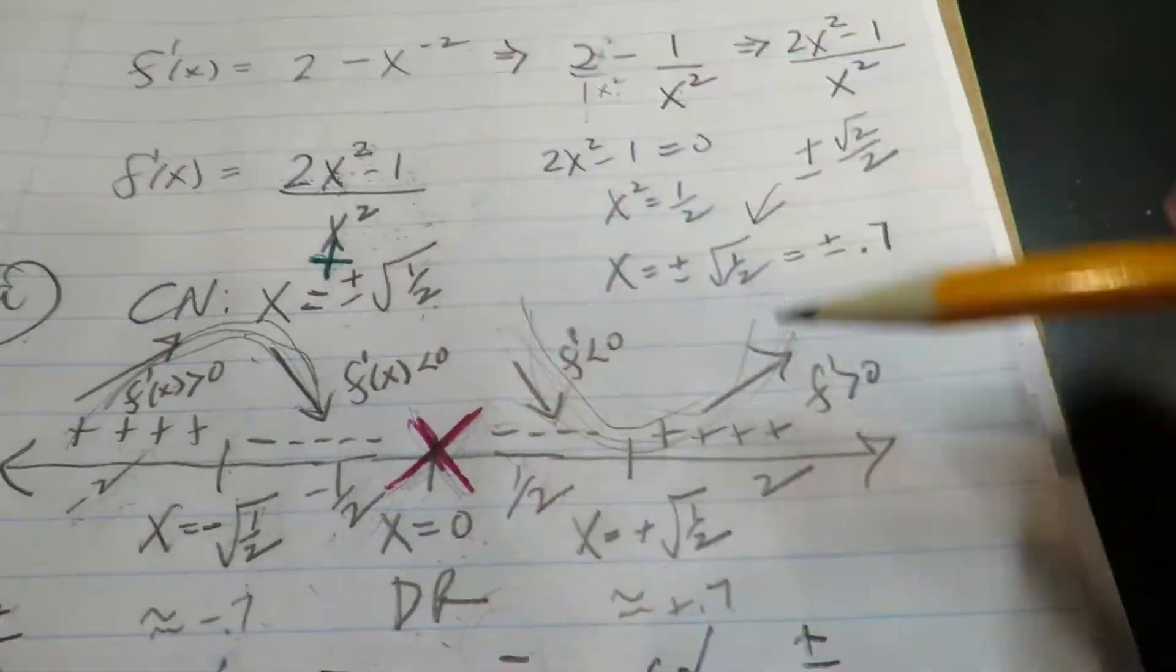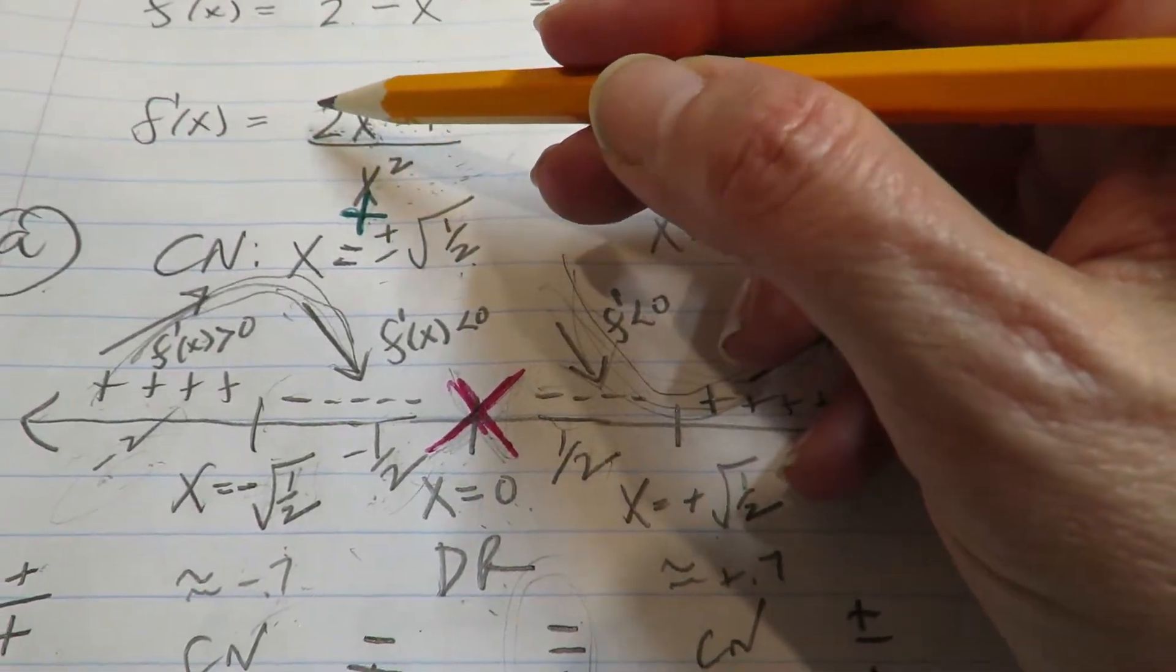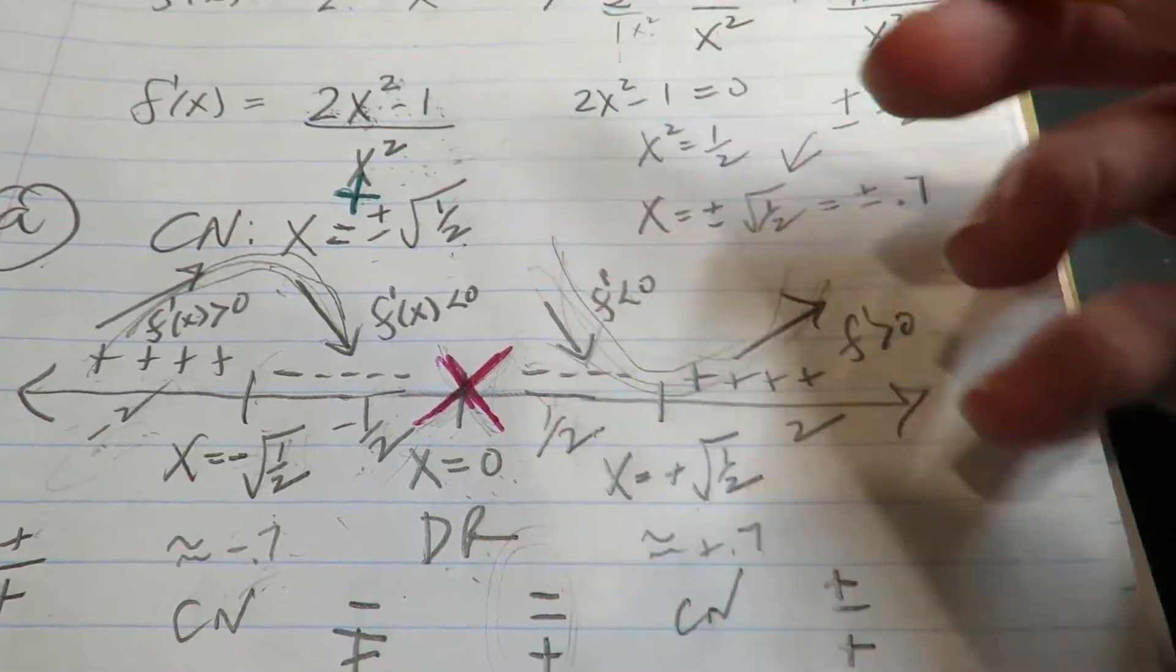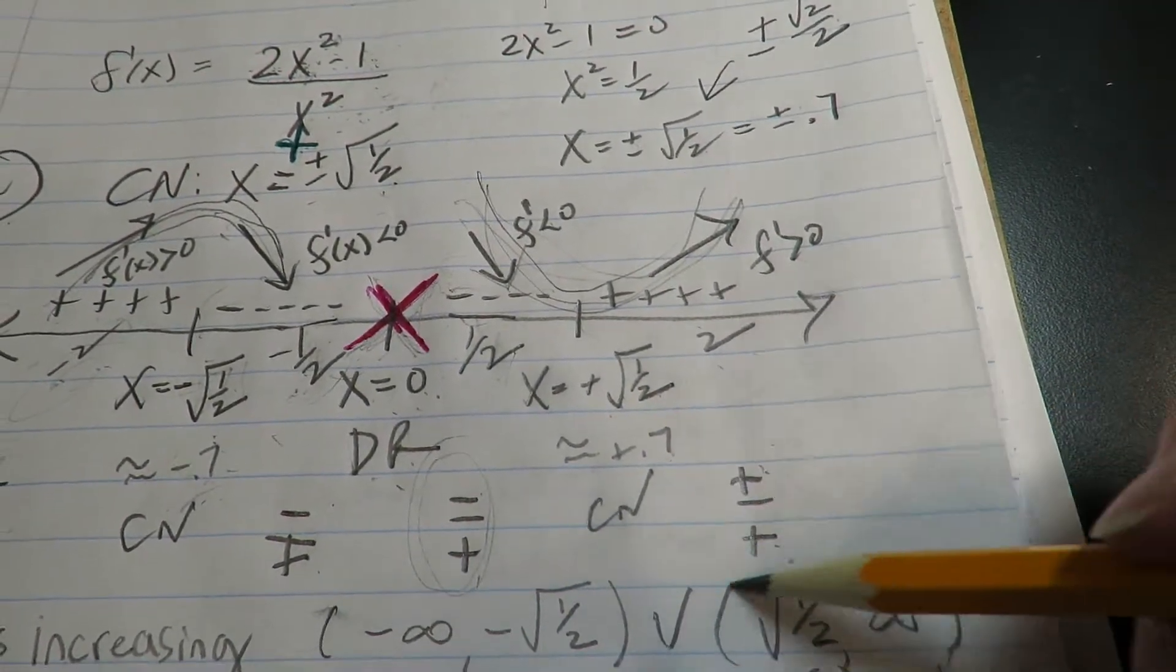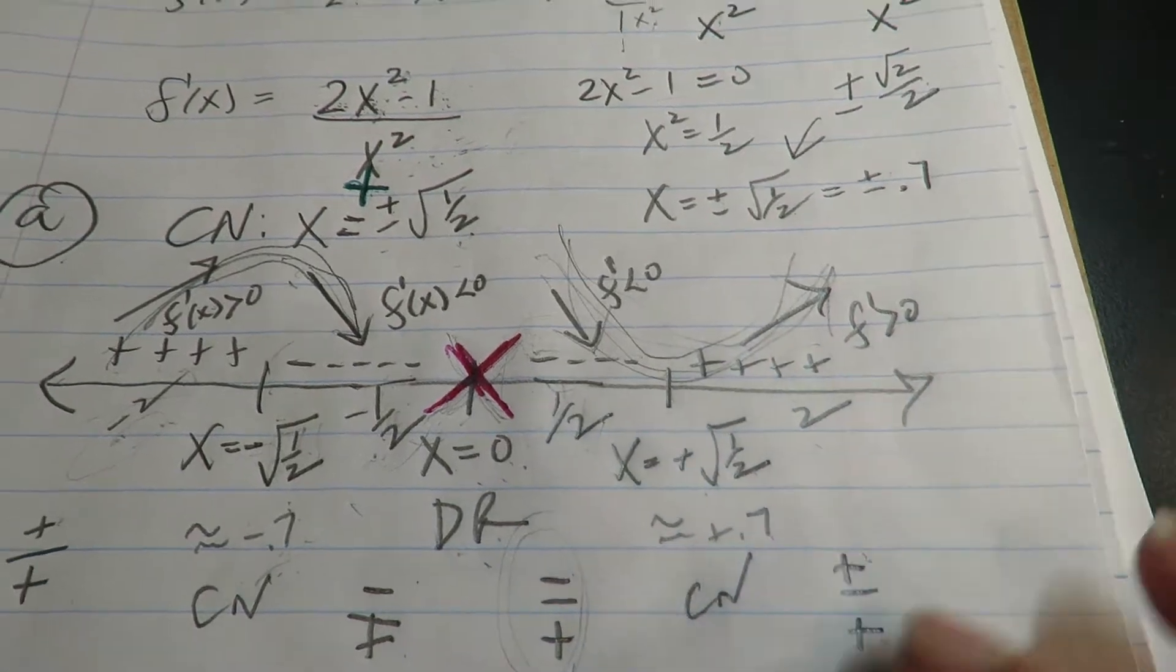And then I picked two for the very last part. As a test value, two squared is four times two is eight. Eight minus one is seven. That's positive. Positive over a positive is overall positive. The function's increasing here. Derivative is positive.